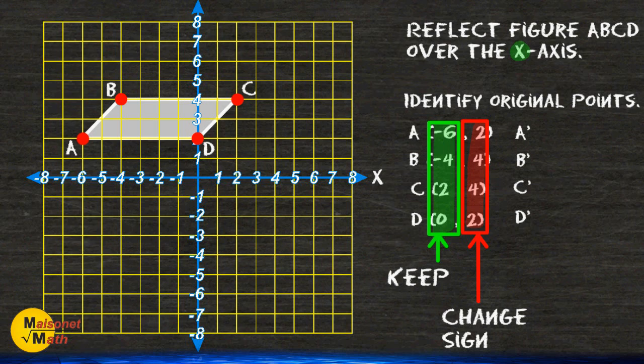The four x values are negative 6, negative 4, positive 2, and 0. So we are simply going to rewrite all of those values exactly as they are.